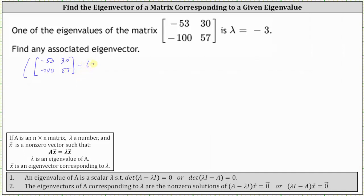Minus, and then lambda is negative three, times the two by two identity matrix times vector x and eigenvector must equal the zero vector.